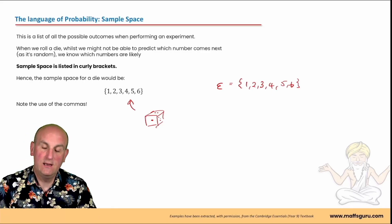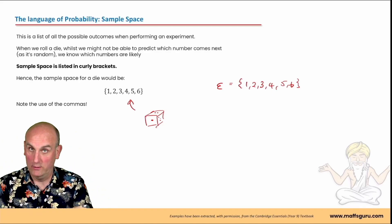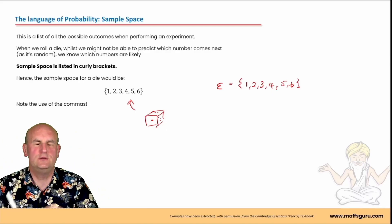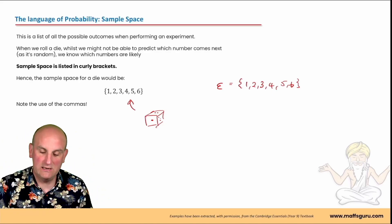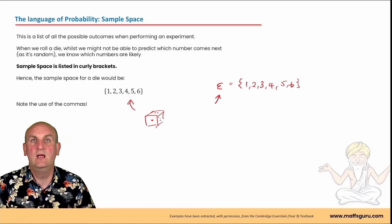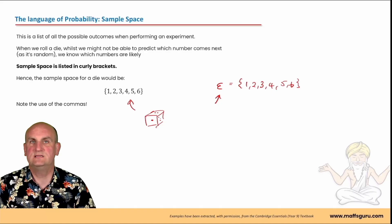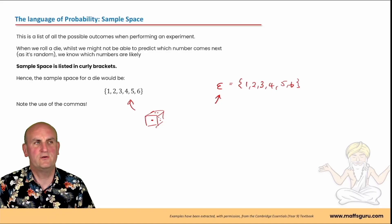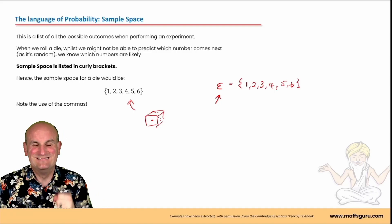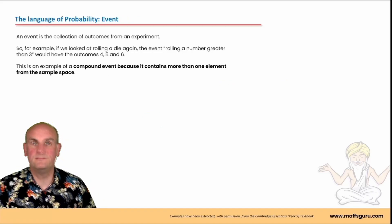If in an exam you don't put the curly braces - wrong. If you just put the numbers - wrong. Generally speaking, I would always make sure you do the backwards E, because that's going to show your examiner you know what you're talking about. Don't forget the commas - so many people forget the commas.